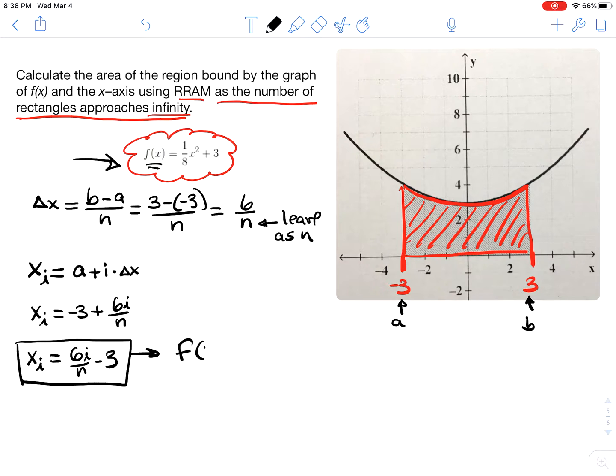So now we have f of x sub i which is 1 eighth times we're going to replace the x variable with 6i over n minus 3 close the parentheses since x is squared. We're going to square this and then we have the plus 3 that follows.